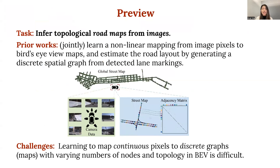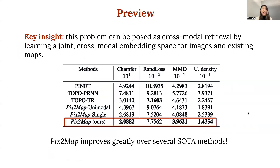We introduce a simple but effective method for inferring topological roadmaps from images. Previous works usually learn a non-linear mapping from image pixels to bird's eye view maps, and then based on the detected lane markings estimate the road layout by generating a discrete spatial graph. This is challenging because learning to map continuous pixels to discrete graphs with different numbers of nodes and topology in BEV is difficult. Our key insight is that this problem can be posed as a cross-modal retrieval by learning a joint cross-modal embedding space for images and existing maps, where maps are represented as discrete graphs encoding the topological layout of the visual surroundings. Our main results show that our method significantly improves over several state-of-the-art baselines.